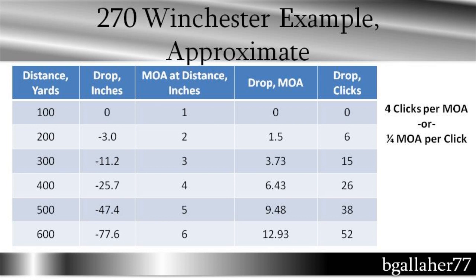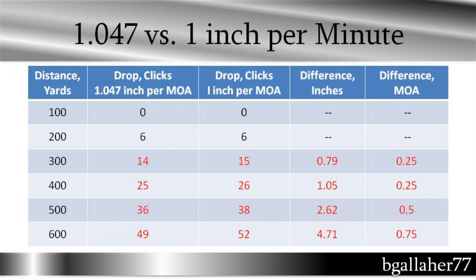Here's that same table showing all the calculations for the approximate one minute of angle per inch. And here's the difference: at 100 and 200 yards, the drop is equal. At 300 yards, it's one click difference. Not really all that significant. At 500 yards, it's a two-click difference, and that's a two-inch difference, or half a minute at 500 yards — practically very little difference. If you're going to be doing some precision shooting, maybe you'd care about that.